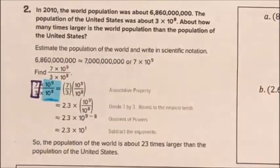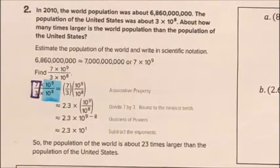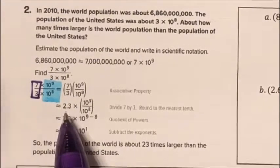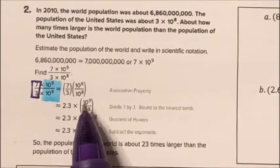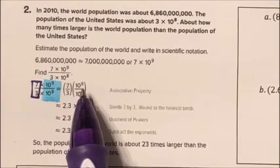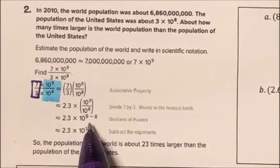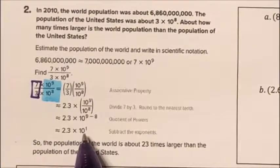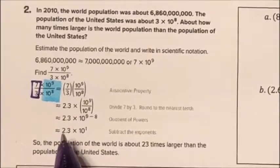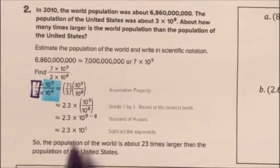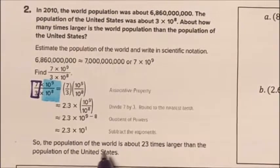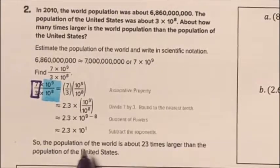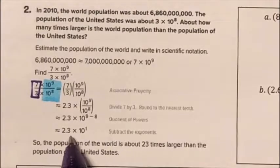I divide 7×10⁹ by 3×10⁸. Seven divided by three gives approximately 2.3, and using Quotient of Powers, I subtract the exponents: 9 minus 8 gives me 1. So I get 2.3×10¹, which means the world's population is about 23 times larger than the population of the United States.